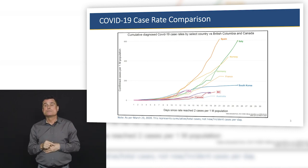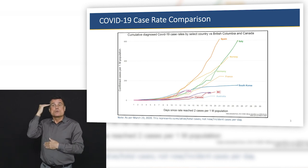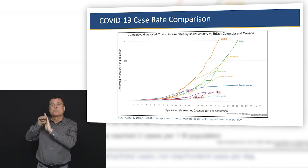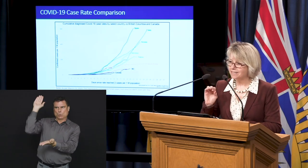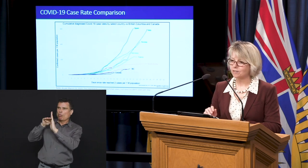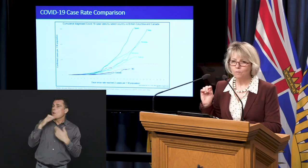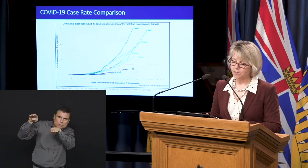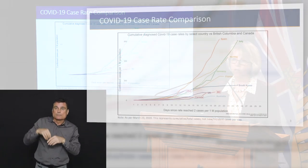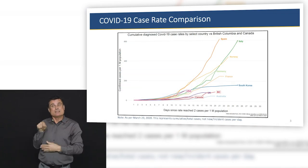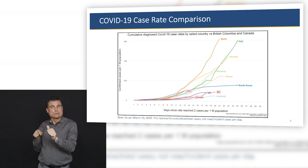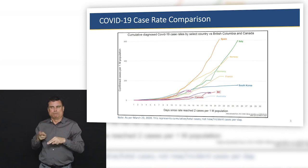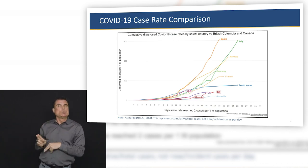You can also see South Korea, which started increasing in the first couple of weeks and then flattened out — that's what we mean when we talk about flattening or bending the curve, and that's what we want to achieve in BC. We can also see that the United States is behind in the time frame since reaching two cases per million and is now starting to increase dramatically as well.